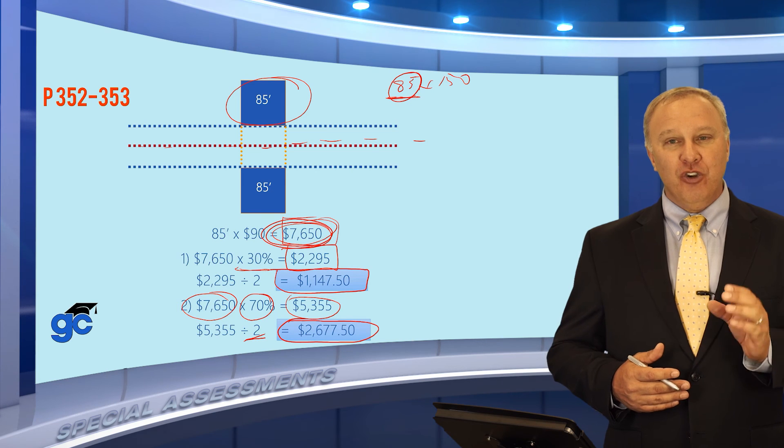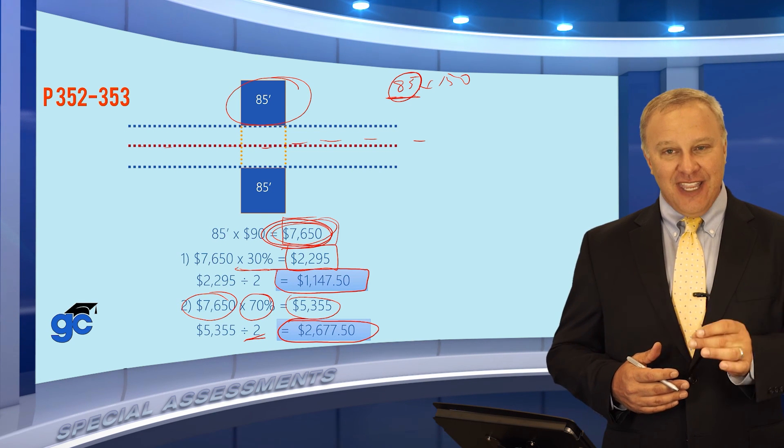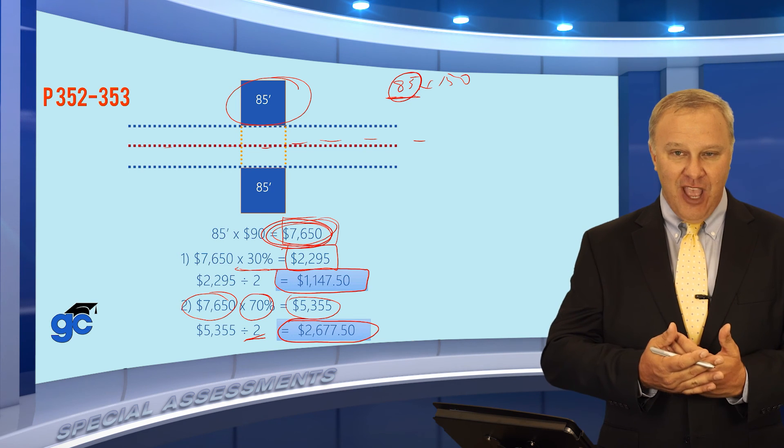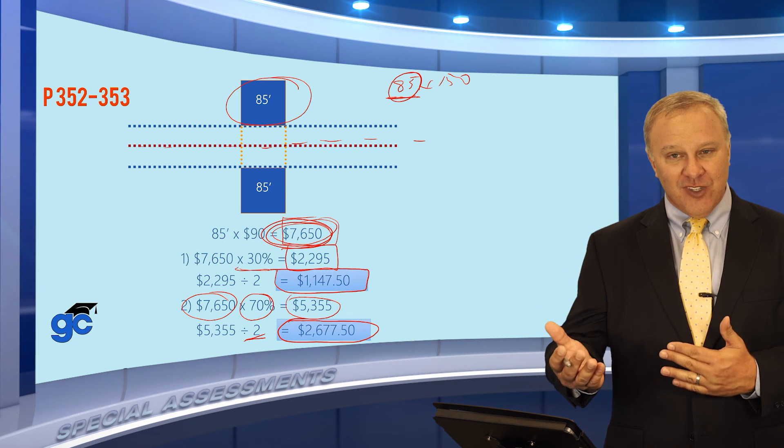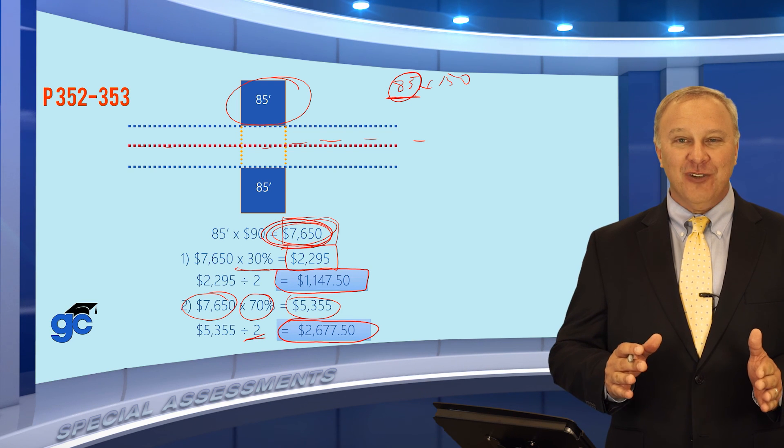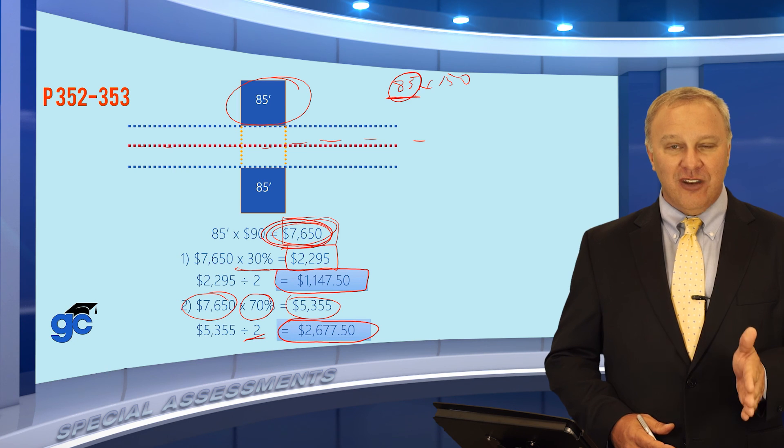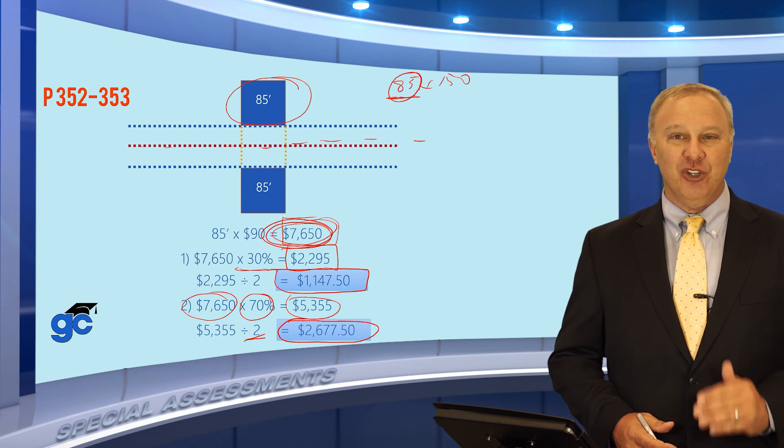Just remember that when you're given the number, make sure that number represents the actual number in the answer. Otherwise, you'd have to figure out the opposite side. You may have to figure the city's side or the homeowner's side. But whichever side you're asked to figure out, don't forget on special assessment questions, you're always going to divide by two to arrive at your final answer.